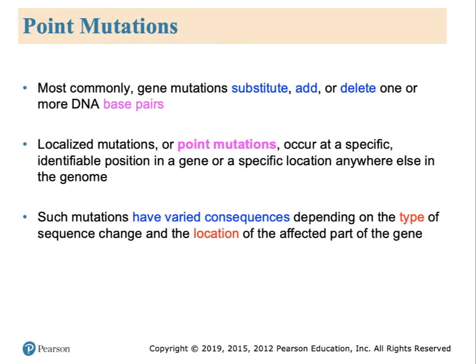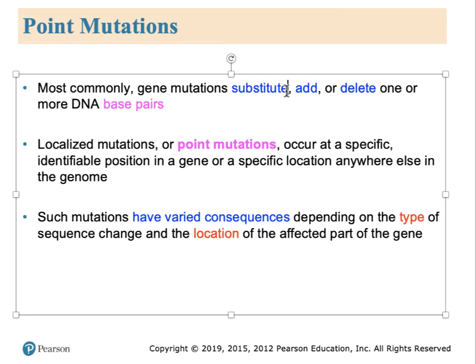The smallest level of DNA change happens at the nucleotide level. These are called point mutations, because a single point on the DNA is affected. In addition to a change known as a substitution, bases can be added or removed. The consequences of point mutations are dependent on where they occur — sometimes inside the gene, other times in the regulatory part of the genome, and other times in repetitive or non-important DNA, known as junk DNA. Thus, their location is very important.